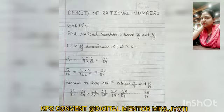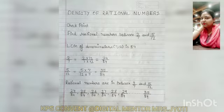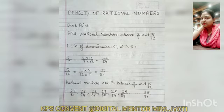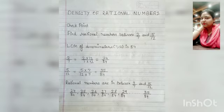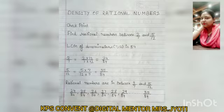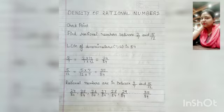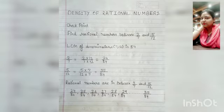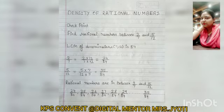Now we write the numbers in between 24 upon 84 and 35 upon 84, like 25 by 84, 26 by 84, 27 by 84, 28 by 84, and 29 by 84, all the way till 35 upon 84.